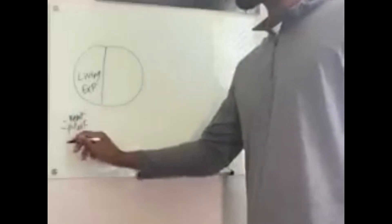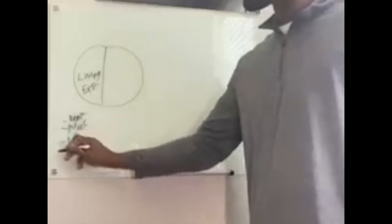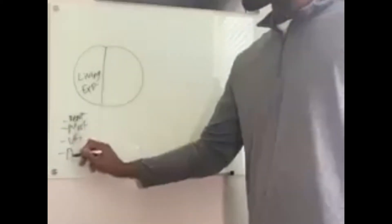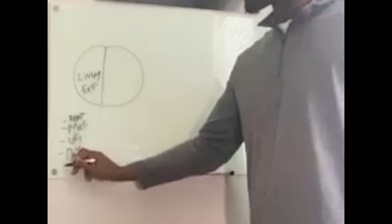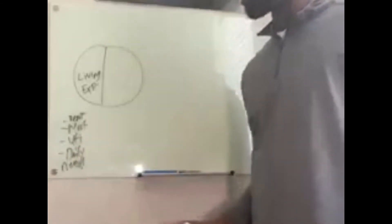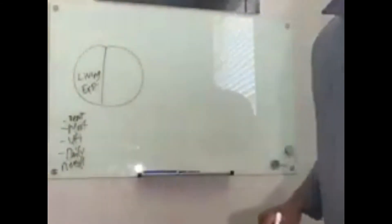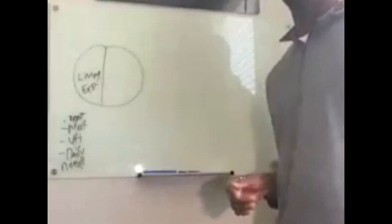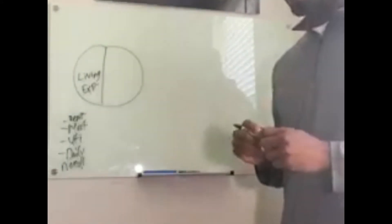Half your money is going to be living expenses. Whether it's rent, mortgage, utilities, daily needs. So that's half your money going off of that.